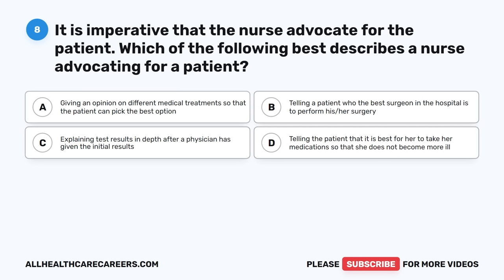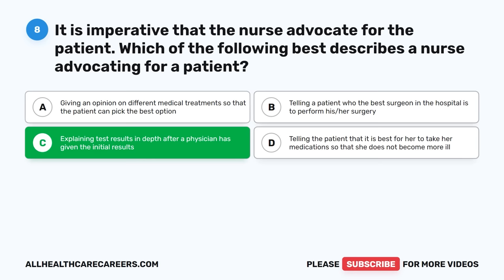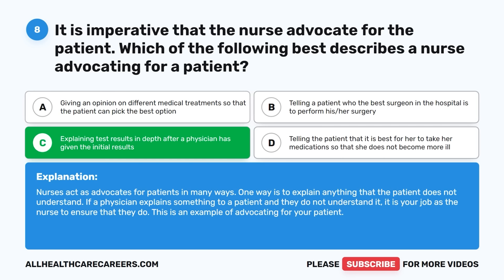Question eight: It is imperative that the nurse advocate for the patient. Which of the following best describes a nurse advocating for a patient? A. Giving an opinion on different medical treatments so the patient can pick the best option. B. Telling a patient who the best surgeon in the hospital is. C. Explaining test results in depth after a physician has given the initial results. D. Telling the patient to take her medication so she does not become more ill. The correct answer is C. Nurses act as advocates in many ways; one way is to explain anything the patient does not understand. If a physician explains something and the patient does not understand, it is the nurse's job to ensure that they do.